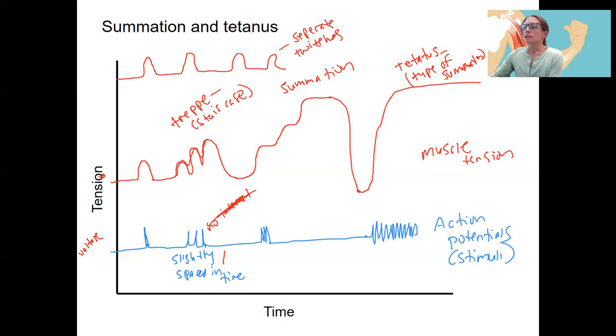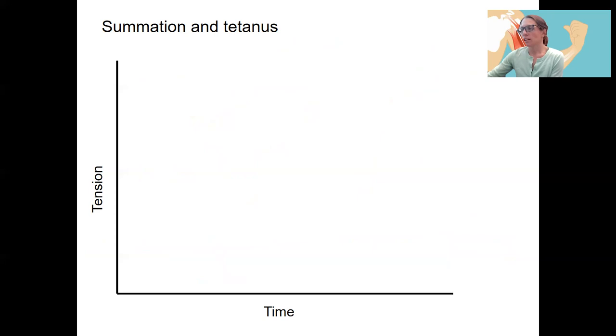Wave summation is subsequent stimuli occurring before relaxation and the tension is summing instead of just staircasing. So it's before relaxation has started to occur. So we actually have summation. And then tetanus is a type of summation where the muscle is contracted fully. And there is no relaxation occurring during that time. Okay. Learning check. Label each of these with what they are in terms of the terms we just talked about. So we've got... Yeah, you can do it.